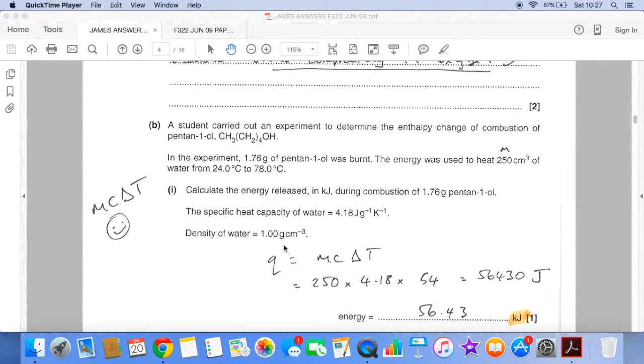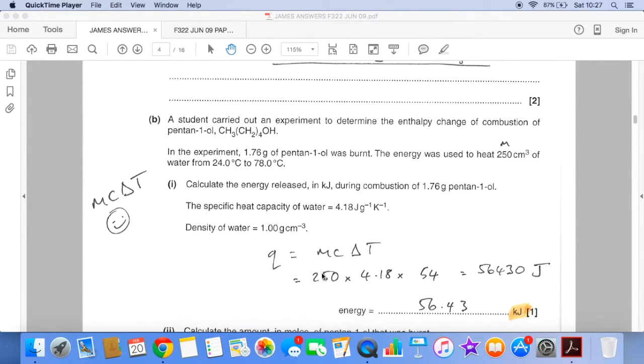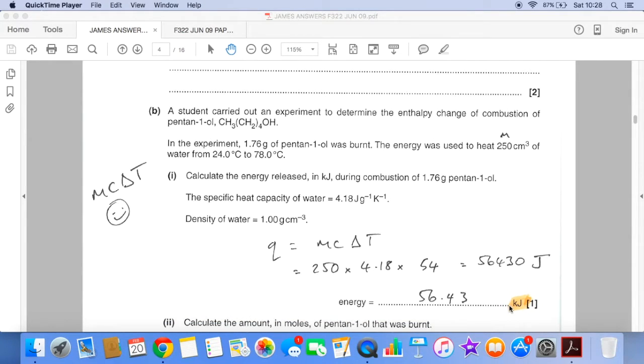So to calculate Q, it's 250 multiplied by 4.18 multiplied by the temperature change 54, that comes out at 56430 joules. But if you see, just keep an eye on the units that they want, kilojoules there. So we need to divide this by 1000, so knock the decimal point back 3, 56.43.